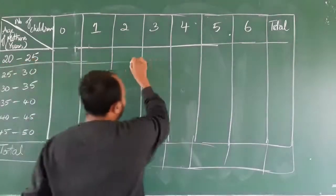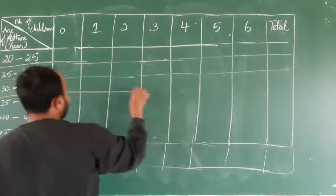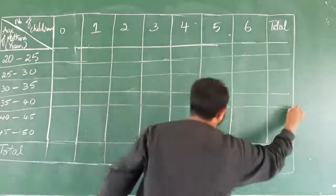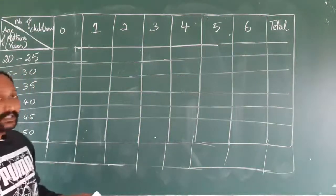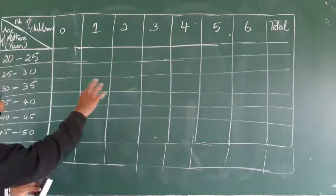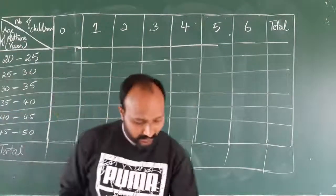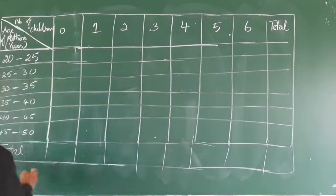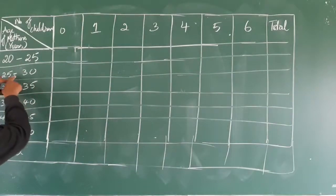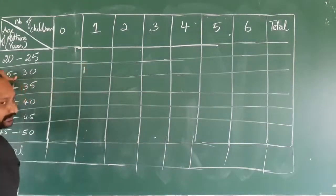So the first class is 20 to 25, followed by 25 to 30, 30 to 35, 35 to 40, and 40 to 45. Now we need to fill this table. Let us consider the values. The first data point is serial number 1: age of mother is 28 and number of children is 1. Age 28 comes in the class interval 25 to 30, and number of children is 1 — so I place a tally mark there.